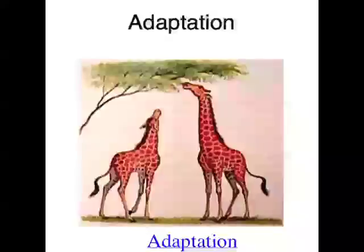Years and years ago, a giraffe didn't just grow a long neck overnight. What would have happened is there would have been a whole bunch of giraffe ancestors. Some of them would have had short necks, and some of them would have had long necks. Then, let's say there was a drought and there wasn't as much food around — only the giraffes with long necks would have been able to eat all the plant material high up in the trees. Those long-neck giraffes would have had enough food and survived, but the giraffes with short necks would have died. So the giraffes with long necks had more kids, and the offspring of an organism have similar characteristics to their parents.